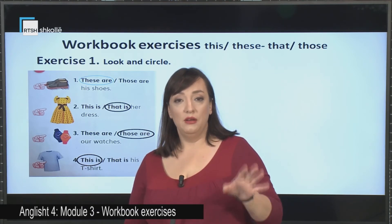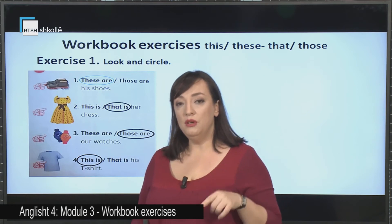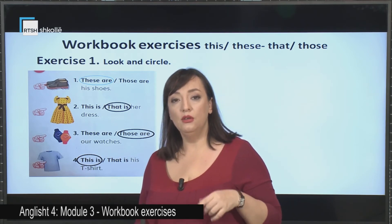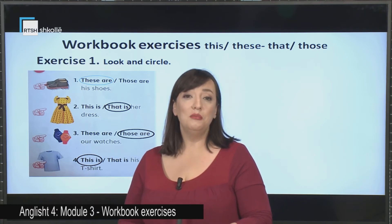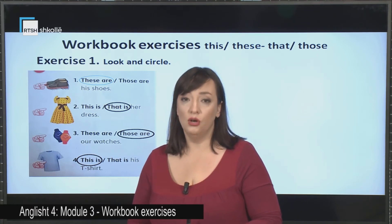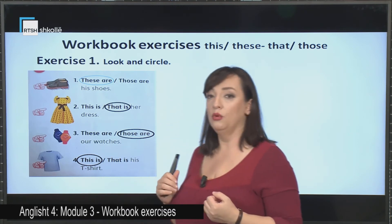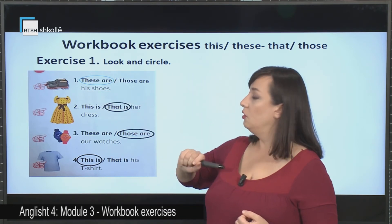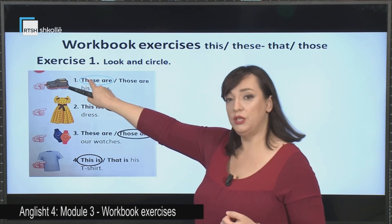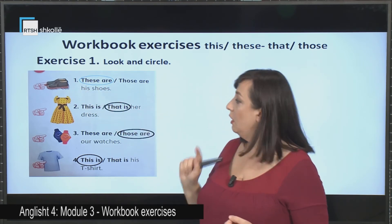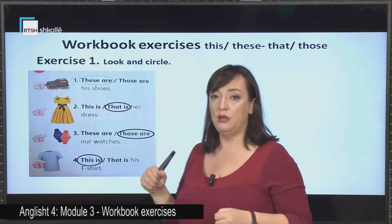Let's go on with some other exercises. In the previous lesson we explained the use of the demonstrative pronouns. In Albanian we call them emrat dëftorë: ky, kjo, ai, ajo. For example: 'Ky është një ushtrim' means the object is near. 'Ai është një ushtrim' means it is far. Remember the rules.